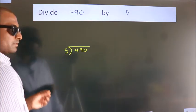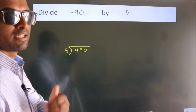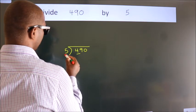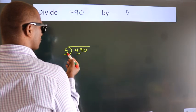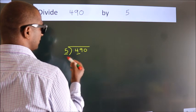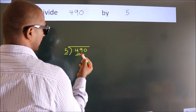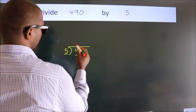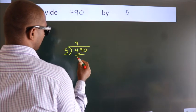This is your step 1. Next, here we have 4, here 5. 4 is smaller than 5, so we should take two numbers, 49. A number close to 49 in the 5 table is 5 nines, 45.